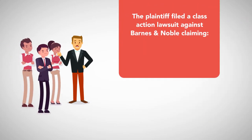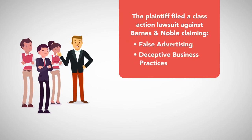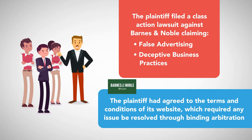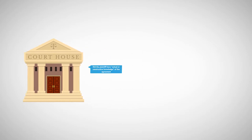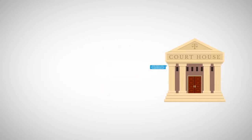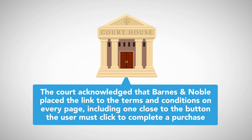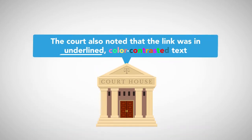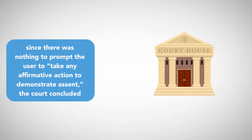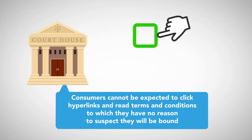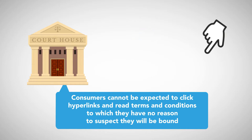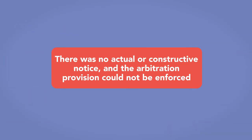The plaintiff filed a class action lawsuit against Barnes & Noble claiming false advertising and deceptive business practices, but the online retailer asserted that the plaintiff had agreed to the terms and conditions of its website which required any issue be resolved through binding arbitration. The federal court looked at whether the plaintiff had actual or constructive knowledge of the agreement, or whether the website as a whole put a reasonably prudent user on notice. The court acknowledged that Barnes & Noble placed the link to the terms and conditions on every page, including one close to the button the user must click to complete a purchase, and that the link was in underlined, color-contrasted text. Nevertheless, since there was nothing to prompt the user to take any affirmative action to demonstrate assent, the court concluded that consumers cannot be expected to click hyperlinks and read terms and conditions to which they have no reason to suspect they will be bound. As a result, there was no actual or constructive notice and the arbitration provision could not be enforced.